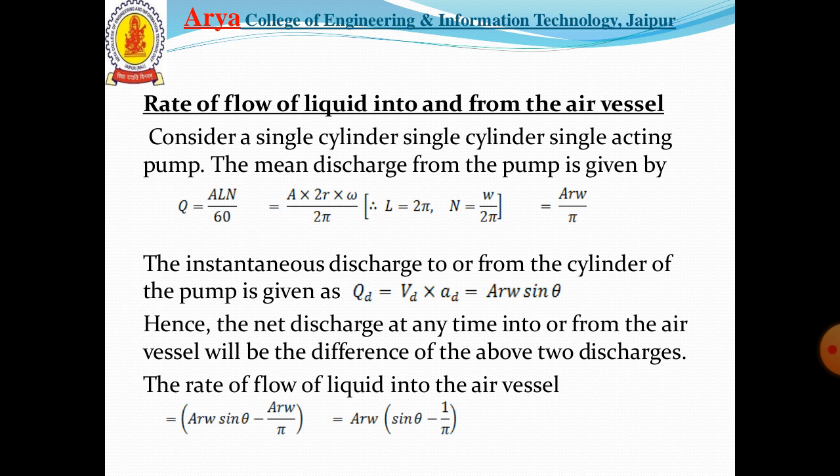Now the calculation for air vessels: the rate of flow of liquid into and from the air vessels. Consider a single acting reciprocating pump. The mean discharge from the pump is given by Q = ALN/60. This can also be written as A·2r·ω/2π, where r is the radius of the crank and ω = 2πN/60. The instantaneous discharge is qd = A·r·ω·sin(θ). The rate of flow of liquid into the air vessel equals A·r·ω·sin(θ) minus A·r·ω/π, which simplifies to A·r·ω·(sin(θ) − 1/π).